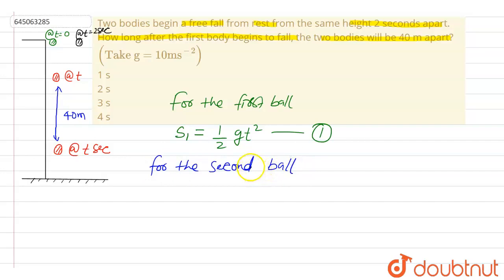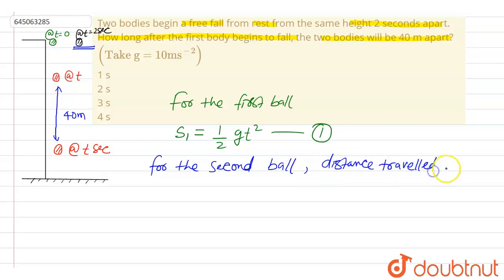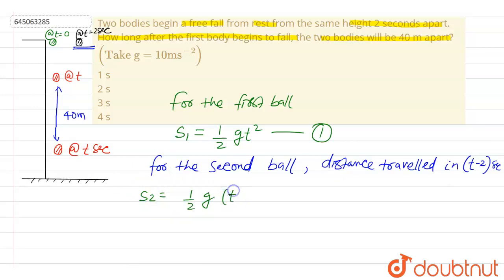For the second ball, one important thing: the journey of the second ball started at t = 2 seconds, so up to t seconds it only gets a time of (t − 2) seconds. The distance traveled in (t − 2) seconds is S2, which can be written as S2 = ½g(t − 2)². This is equation two.